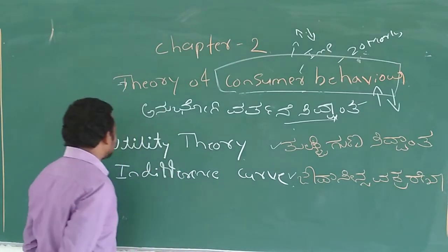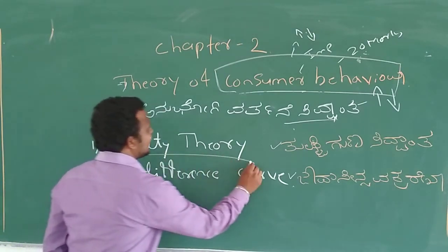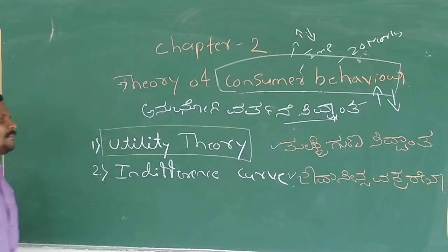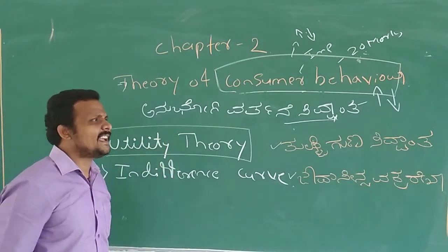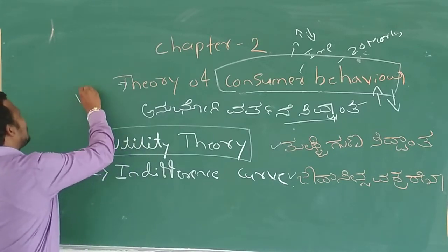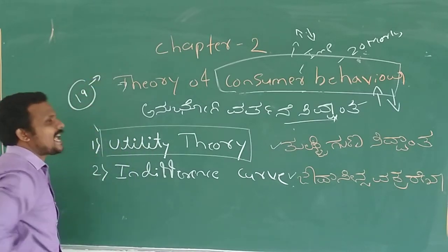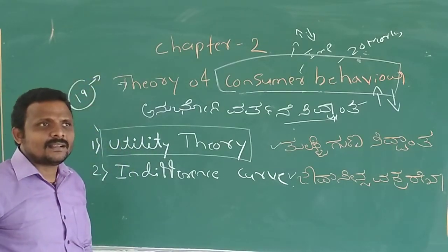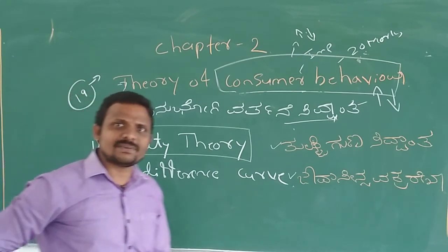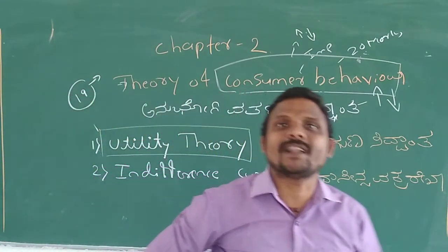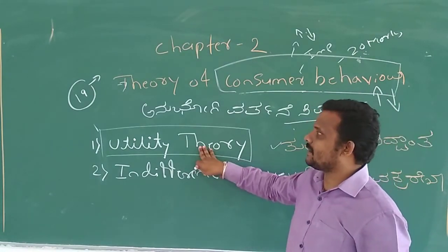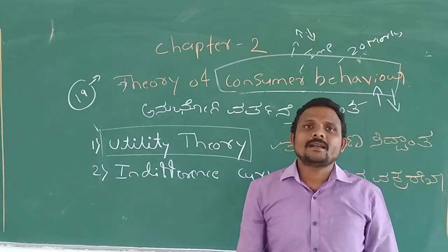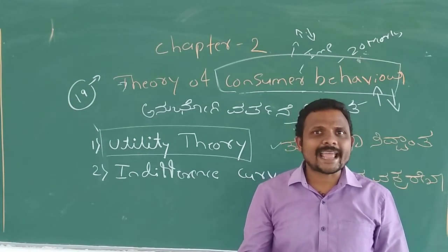First, we have discussed the utility theory. Before discussing the utility theory, in the 19th century, this theory was first explained by economists like Jevons, Menger, and Walras. In the 19th century, the utility theory was first developed or explained by Jevons, Walras, and Menger.